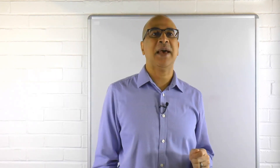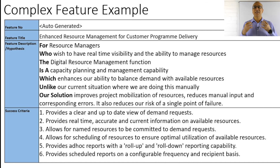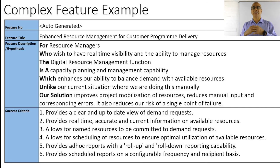Let's have a quick look at the same example using this complex feature template. For resource managers who wish to have real-time visibility and the ability to manage resources, you have the function name — it's a capacity planning and management capability. What does it do? It enhances our ability to balance demand with available resources, unlike our current situation — and it goes on to explain how that actually works. Success criteria has no change — it's got to be sharp. Remember, your success criteria at the feature level should be driving your tests, which then go down to your tests at the story level as well.